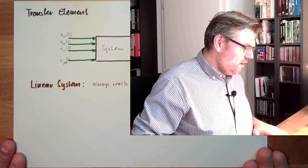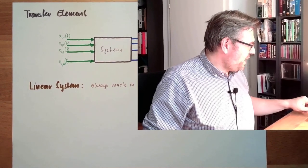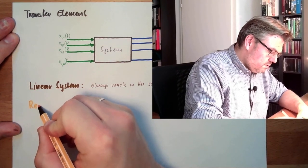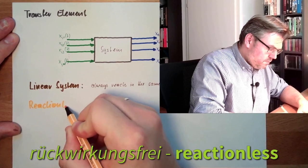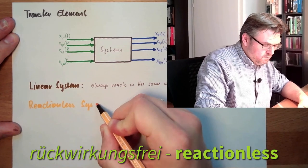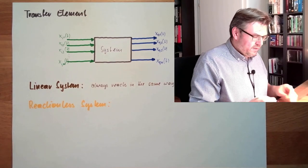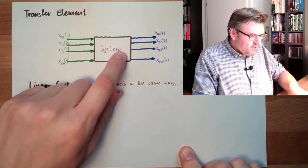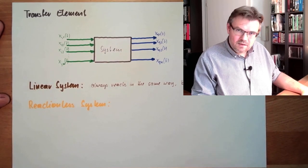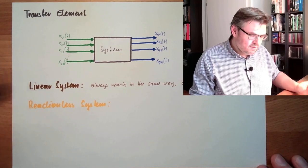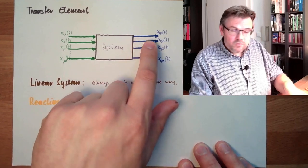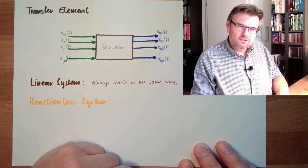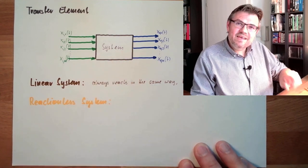Second prerequisite of this system is that it shall be reactionless. So, it shall be a reactionless system. What does this mean again? Reactionless. I mean, I want to have a reaction. I just said, there is some input, so the system is reacting with some output. That's true. And this doesn't mean reactionless. Reactionless means if the output is changing, it does not have any influence on the input.